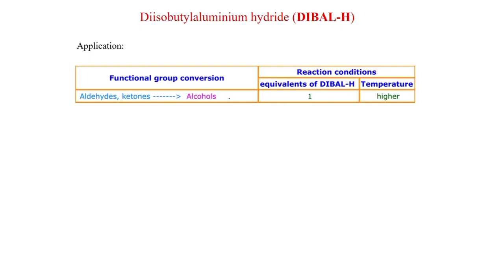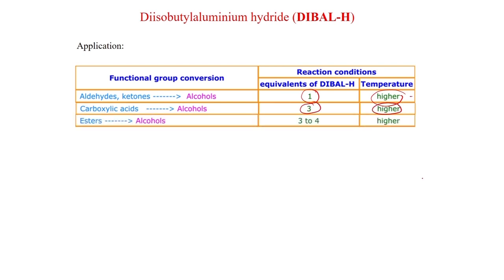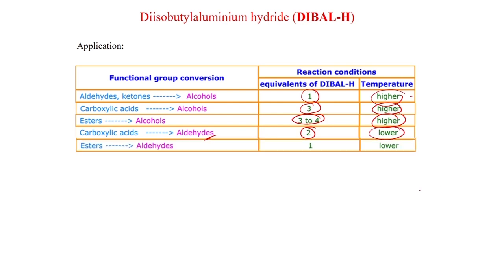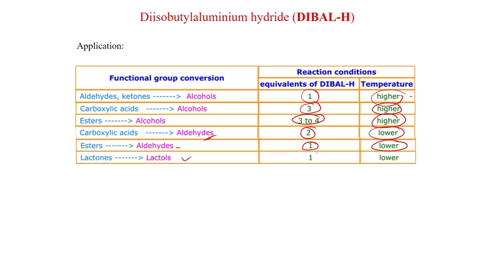Various reductions can be carried out with DIBAL-H. Aldehydes and ketones can be converted to alcohols with 1 equivalent of DIBAL-H at higher temperature. Carboxylic acids to alcohols require 3 equivalents at higher temperature. Esters to alcohols require 3 to 4 equivalents at higher temperature. Carboxylic acid to aldehyde — an important reaction — uses 2 equivalents DIBAL-H at lower temperature. Esters to aldehyde uses only 1 equivalent at lower temperature. Lactones to lactols also use only 1 equivalent at lower temperature.